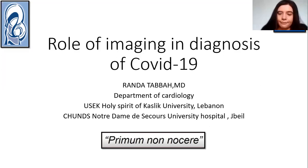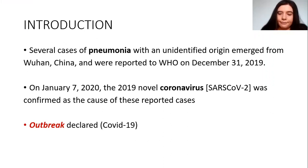Several cases of pneumonia with unknown origin emerged in Wuhan, China, and were reported by the WHO on December 31, 2019. On January 7, 2020, the coronavirus was confirmed and the outbreak started, and it was named COVID-19.